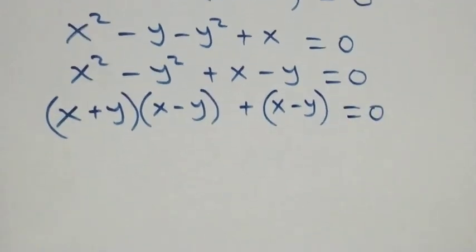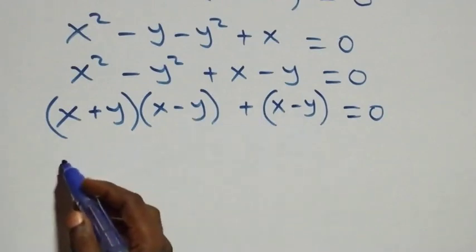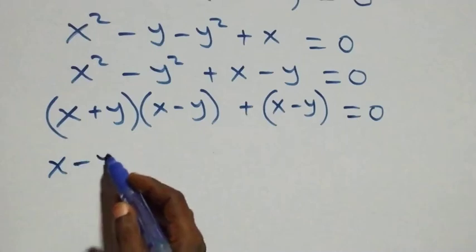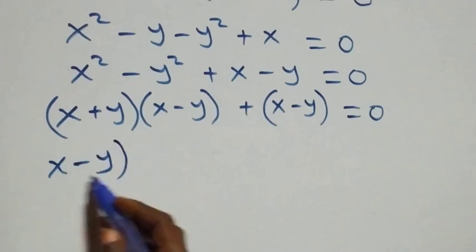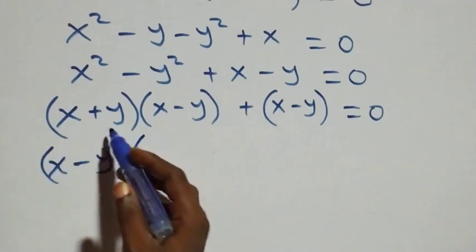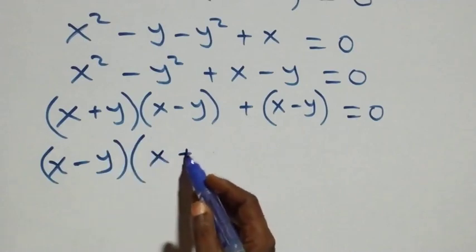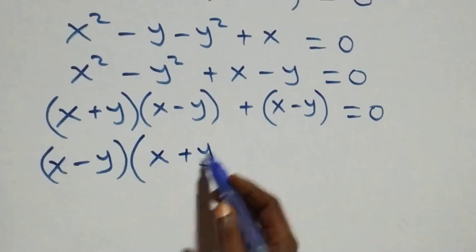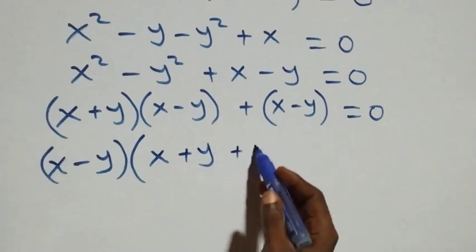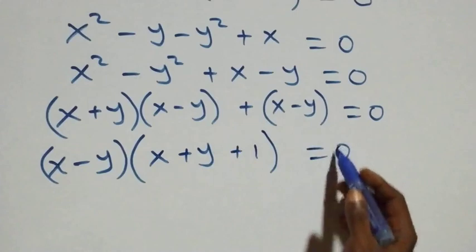We factor out (x - y), leaving us with (x - y)(x + y + 1) = 0.